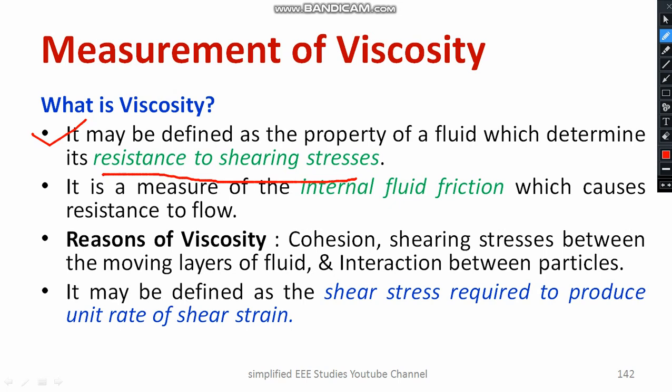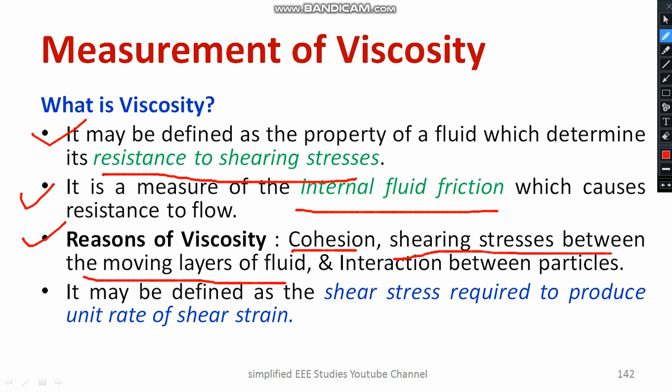Viscosity measures the internal fluid friction. Why do some fluids like honey move very slowly? Because the molecules are tightly packed — there is internal friction among the particles, a cohesive force, which offers resistance to the movement of that particular fluid. The major reasons for viscosity are: cohesive force between the particles, shear stress between the moving layers of fluid, and interaction between the particles. You must be familiar with turbulent flow and laminar flow — the movements of fluids occur in different layers.